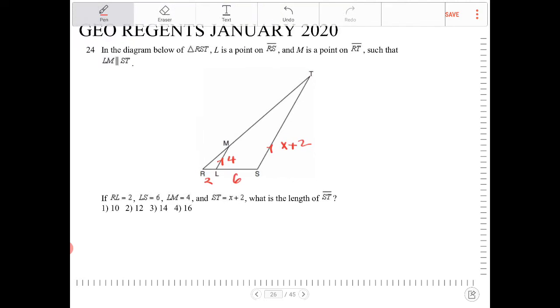So I have two similar triangles here. How do I know that? Because I have a small triangle, RLM, and I have a bigger triangle in the same shape, RST. However, they both share angle R, and not only that, these angles are going to be the same because of alternate interior angles.